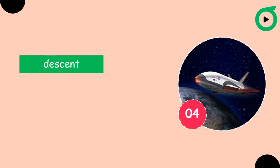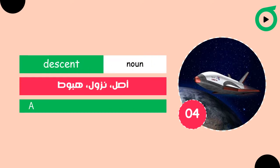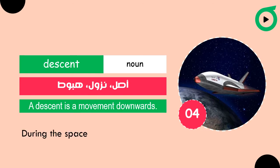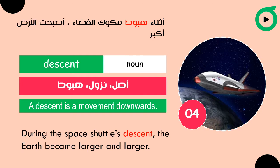Descent. A descent is a movement downwards. During the space shuttle's descent, the Earth became larger and larger.